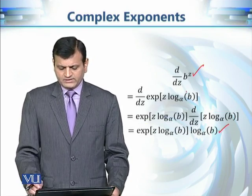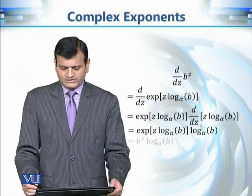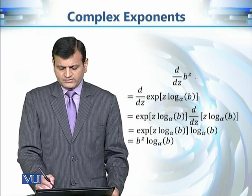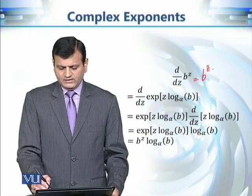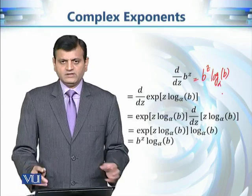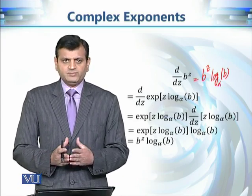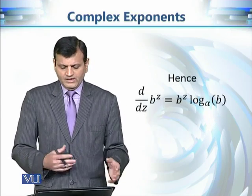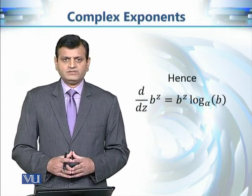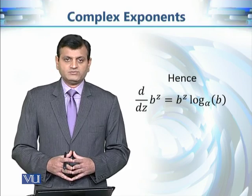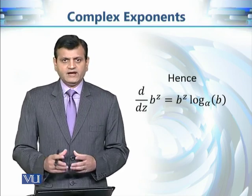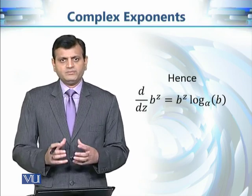Since log_α(b) is a fixed complex number, the derivative of z times log_α(b) with respect to z is simply log_α(b). This gives us the expression: the derivative of b to the power z is b to the power z times log_α(b), where α indicates the chosen branch cut. This result holds for one branch of this exponential function, provided b does not lie on the branch cut.